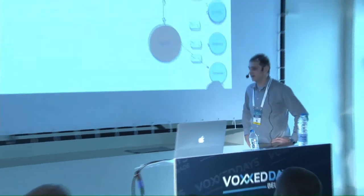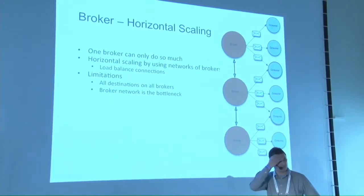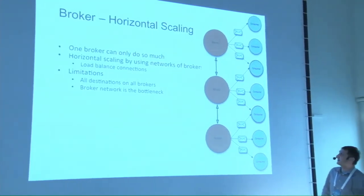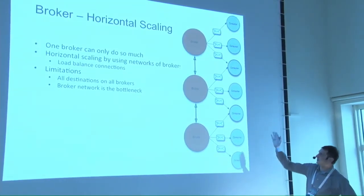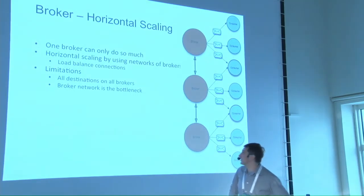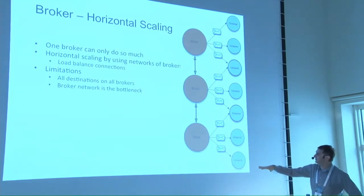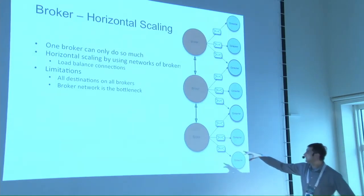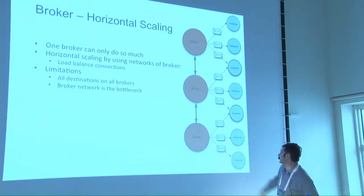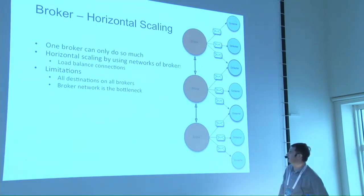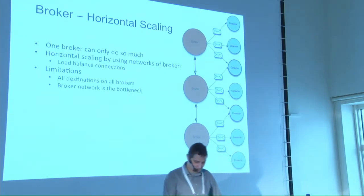After vertical scaling, you can still hit the physical limit of what a single machine can do. The usual next step is to create a network of brokers and load balance connections and traffic between them. This helps because you reduce the number of connections and the load on a single broker. But still, all destinations need to live on all brokers, and there will be in theory a lot of traffic on the connections between brokers. At some point you'll again hit the limits of this architecture because those network connections will become a bottleneck of the system.